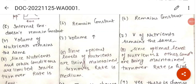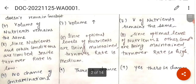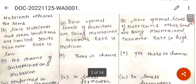In batch culture, the internal environment does not remain constant. In fed-batch and continuous culture, the internal environment remains constant. Regarding volume: in batch culture the volume of nutrients remains the same, in fed-batch the volume increases, and in continuous culture the volume of nutrients remains the same.